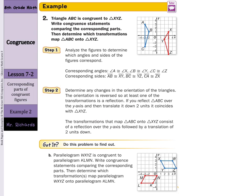Now can we do this ourselves? Parallelogram WXYZ is congruent to parallelogram KLMN. Write congruent statements comparing the corresponding parts, then determine which transformations map parallelogram WXYZ onto parallelogram KLMN. Starting with the angles: angle W is congruent to angle K, angle X is congruent to angle L, angle Y is congruent to angle M, and angle Z is congruent to angle N. Notice I went in the same order — WXYZ corresponds to KLMN — so you can use that order to help match your angles.